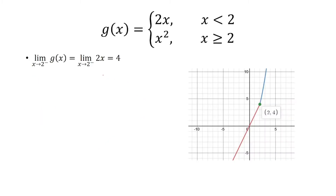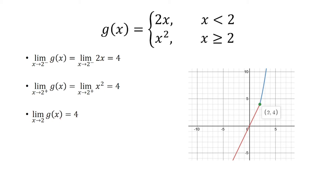Now, in order to evaluate the limit, we're going to look at the left-hand limit and the right-hand limit. For the left-hand limit, we're looking at when x is less than 2, and that's the function y equals 2x. Plugging in 2 gives us 4. For the right-hand limit, as x approaches 2 from the right, we're looking at x squared. Plugging in 2 again, we get 4. So the limit as x approaches 2 of g of x is 4. Since g of 2 is 4 and the limit is 4, g of x is continuous.